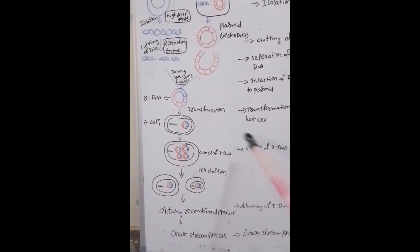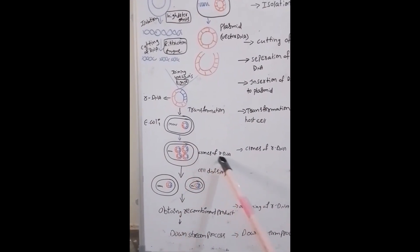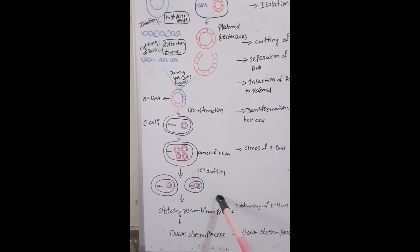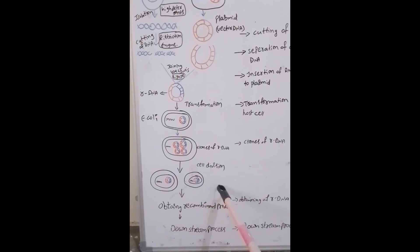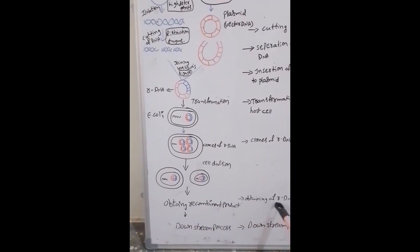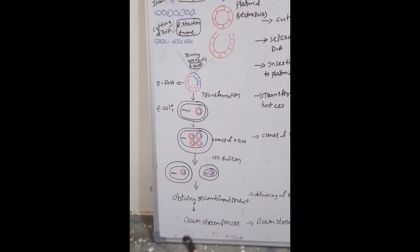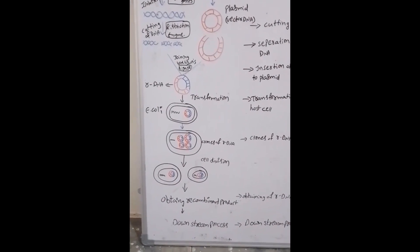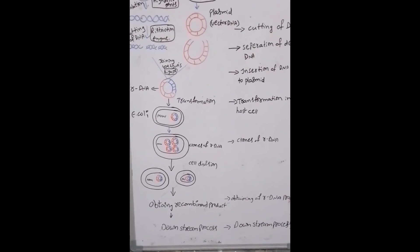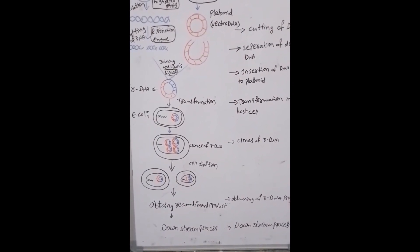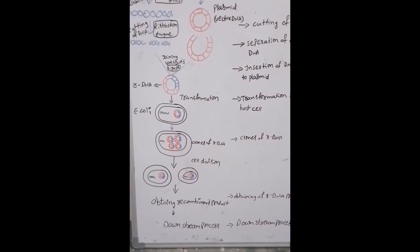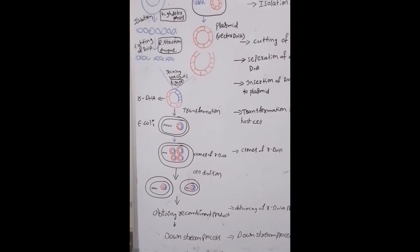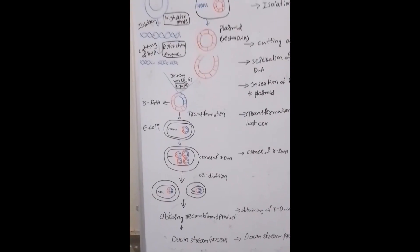Next, clones of rDNA: the bacterial cell clones the rDNA, rDNA is multiplied, and cell division occurs, producing many bacterial cells. After that, we obtain the rDNA product. The last step is downstream processing, where the product is purified and tested before sending it to the market.